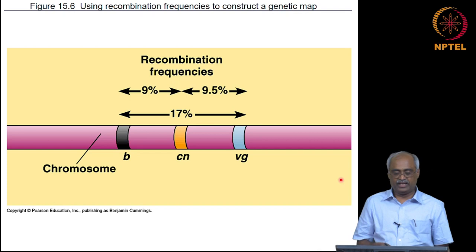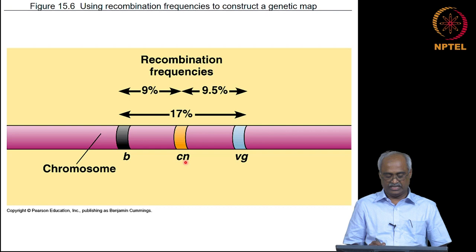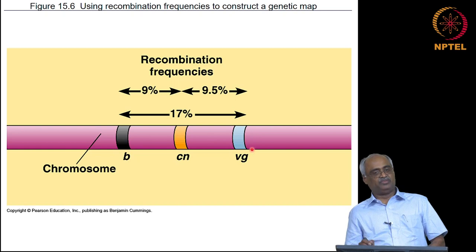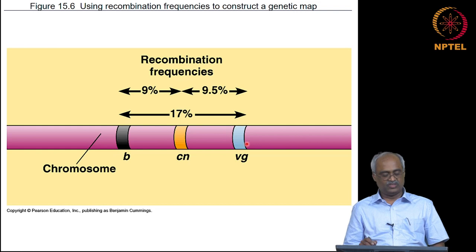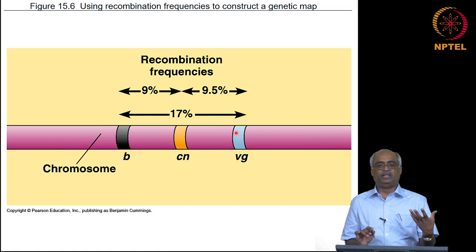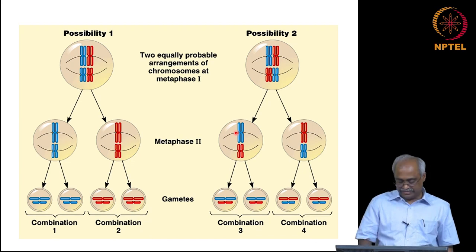Taking another locus CN and comparing it to the B-VG distance of 17 percent, by determining the distances between these loci people were able to determine that VG is on the left side of the black locus on the chromosome at a specific distance. We will learn the details of genetic crosses later, but the main point is that recombination frequency reflects the distance between different loci on a given chromosome.